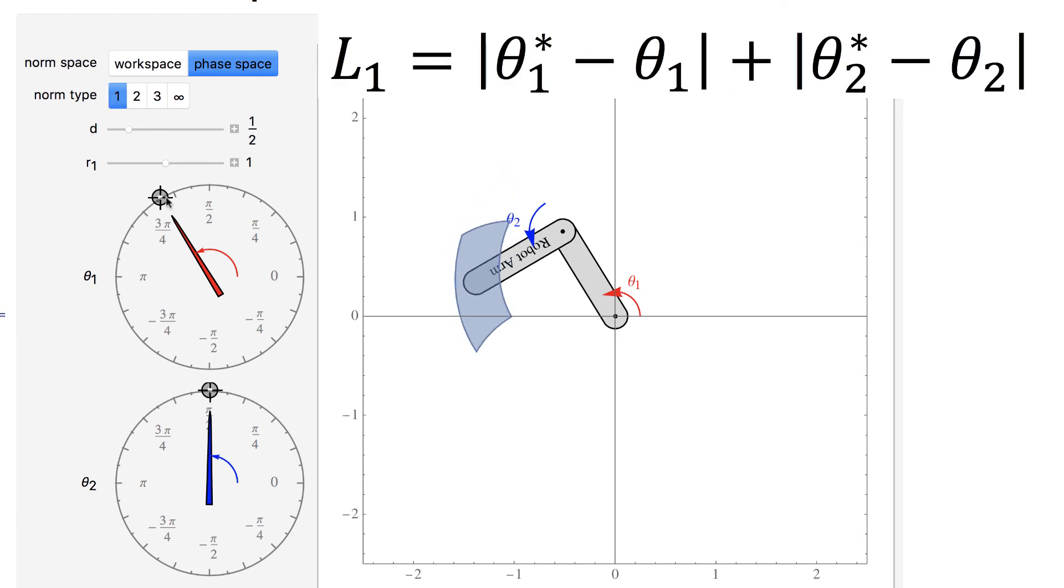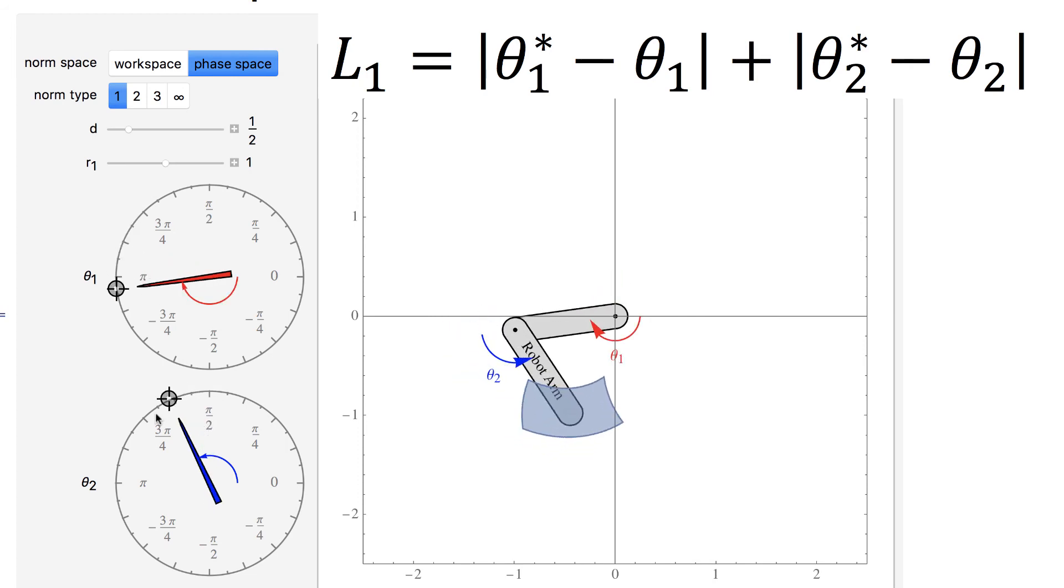You can see that the 1-norm is no longer square shaped. The blue close regions are a function of the current arm configuration.